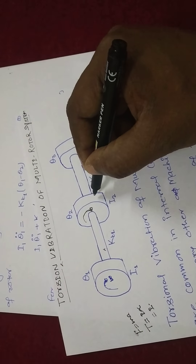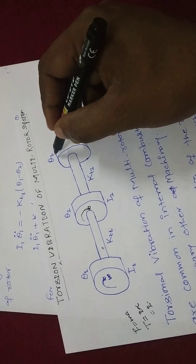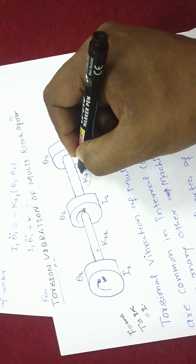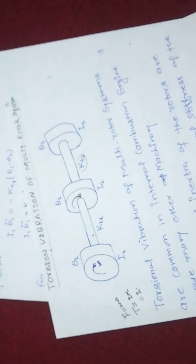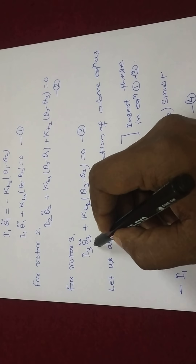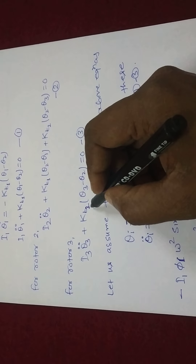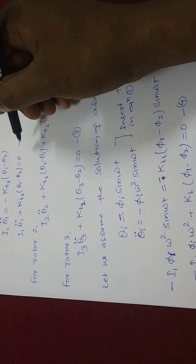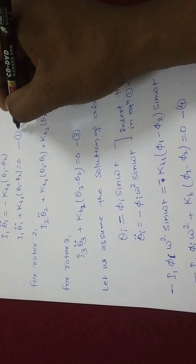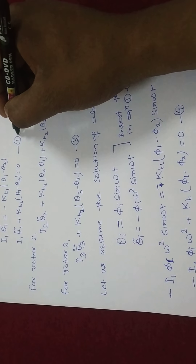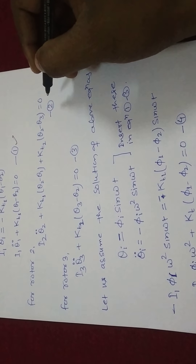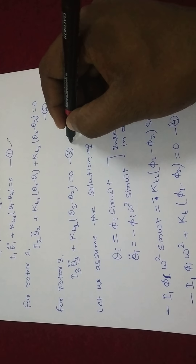For rotor 3, which is at the free end, only theta 2 affects it. The governing equation is: I3 theta 3 double dot plus KT2 (theta 3 minus theta 2) equals 0. These three equations form the complete set of governing differential equations for the multirotor system with rotors 1, 2, and 3.